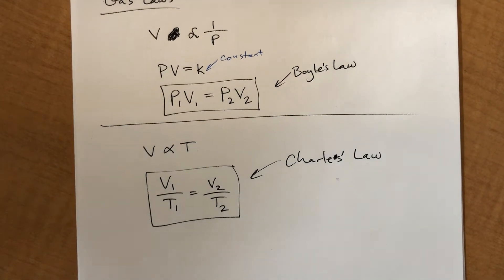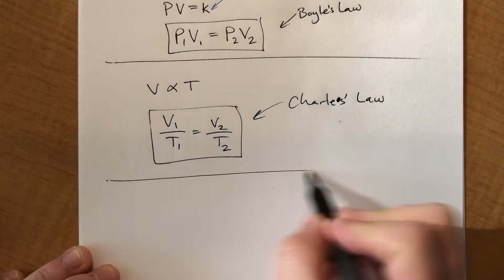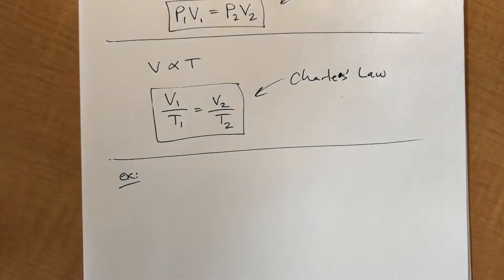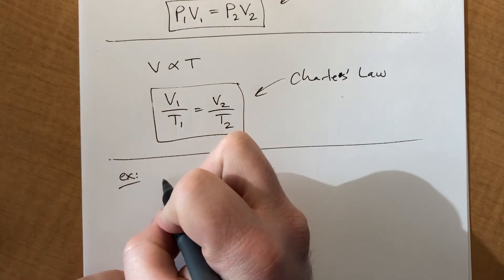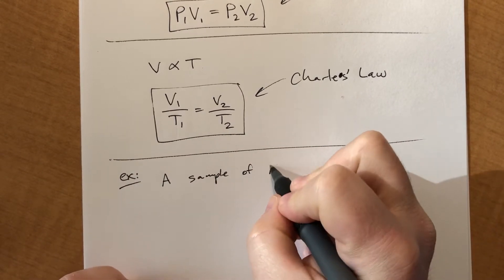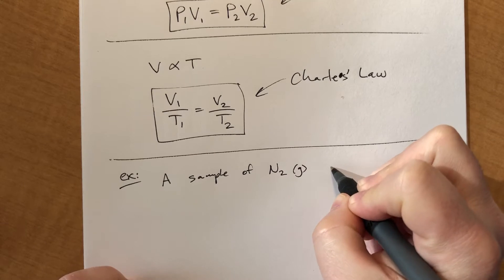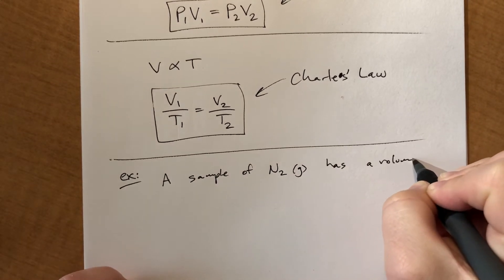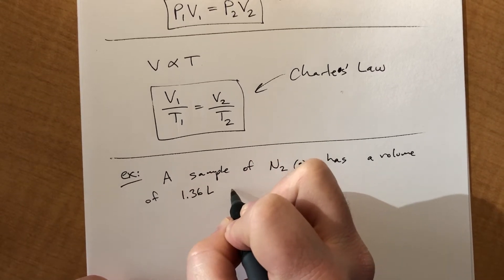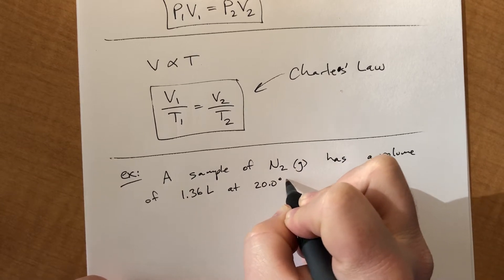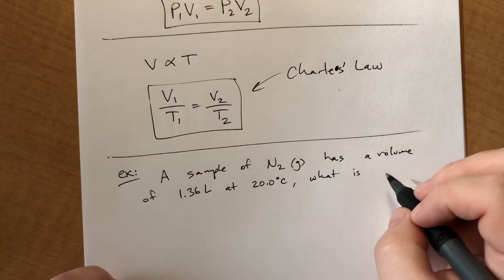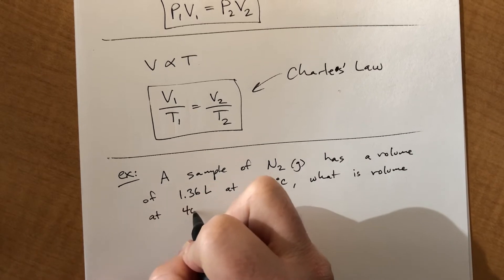So we have volume and temperatures. Let's use that one. So let's say a sample of nitrogen gas has a volume of 1.36 liters at 20.0 degrees Celsius. We want to know if we change the temperature, what's the new volume going to be? What is the volume at 40 degrees Celsius?